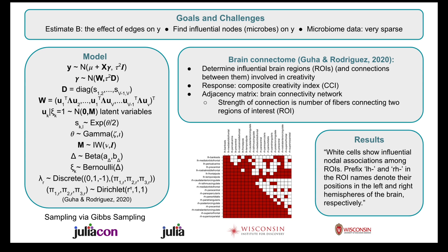We seek to estimate the effect of both the phylogenetic network edges and the individual microbes on the response. Microbiome data is very sparse, so it's important to use a model that works well on sparse data. We seek to adapt a Bayesian network regression model originally developed by Guhan Rodriguez for brain connectome data.